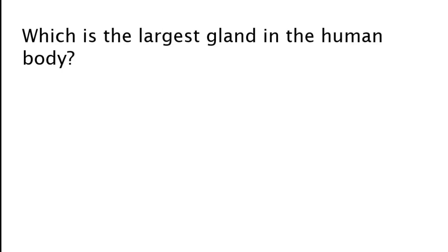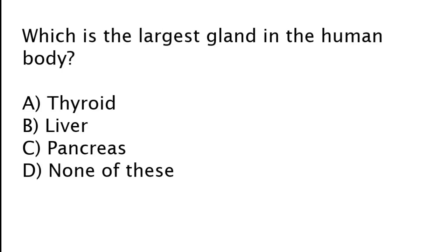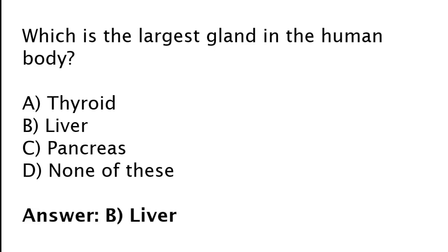Which is the largest gland in the human body? Thyroid, liver, pancreas, or none of these? The correct answer is option B. Liver is the largest gland in the human body.